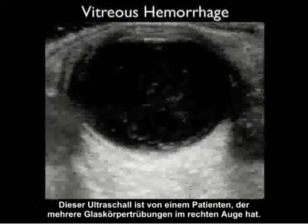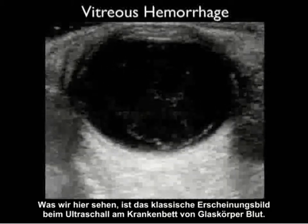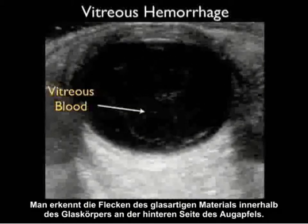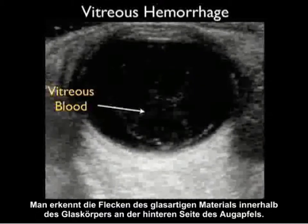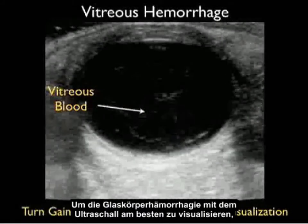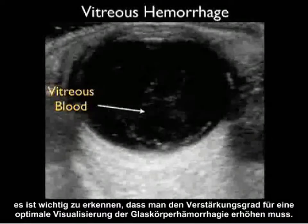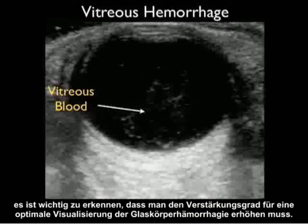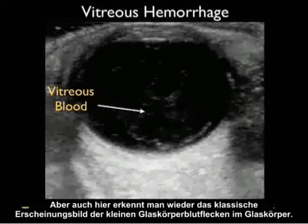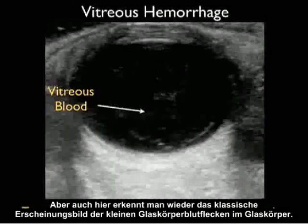This ultrasound was taken from a patient who experienced multiple floaters within their right eye. What we see here is the classic appearance on bedside ultrasound of vitreous blood — speckles of vitreous material within the vitreous cavity, the posterior aspect of the eyeball. To best visualize vitreous hemorrhage on bedside ultrasound, it's important to turn the gain up to a high level for optimal visualization. Again we see the classic appearance: those little speckles of vitreous blood within the vitreous body.